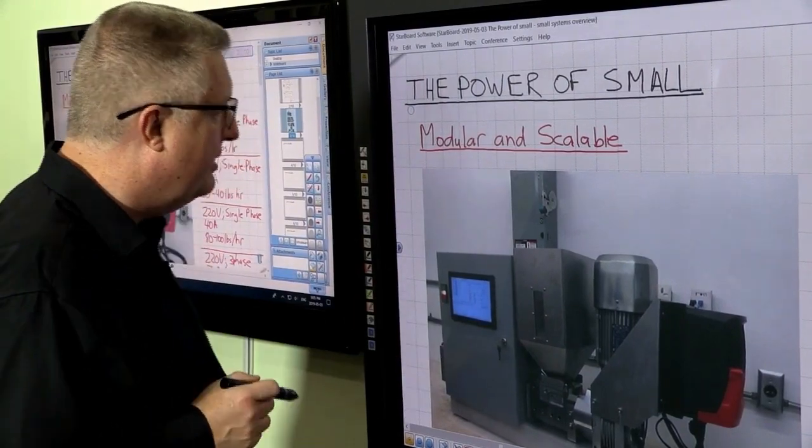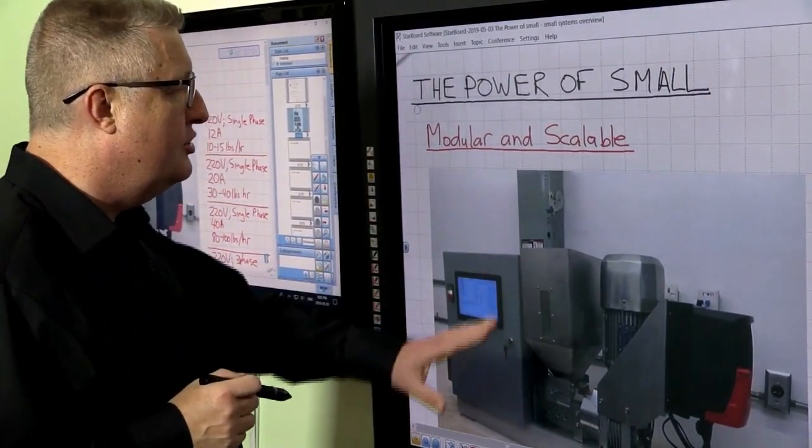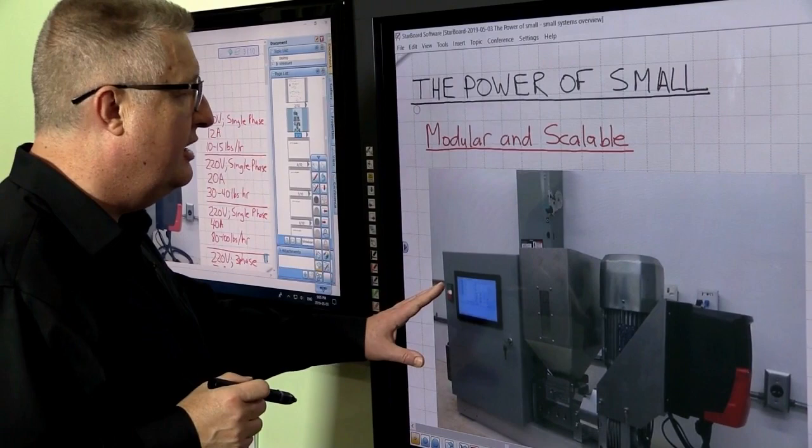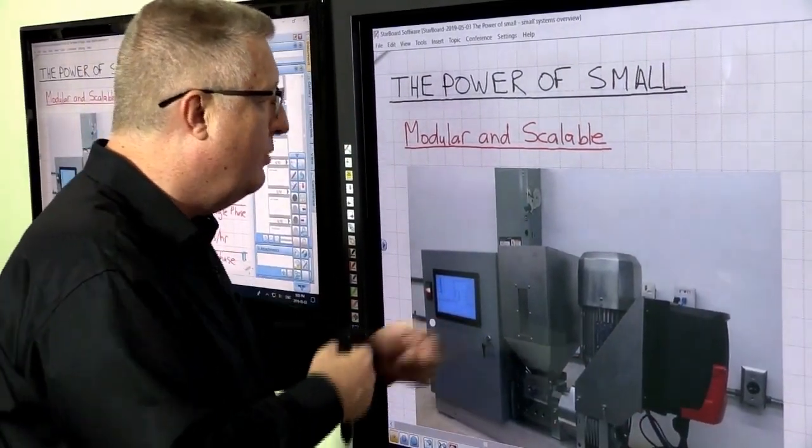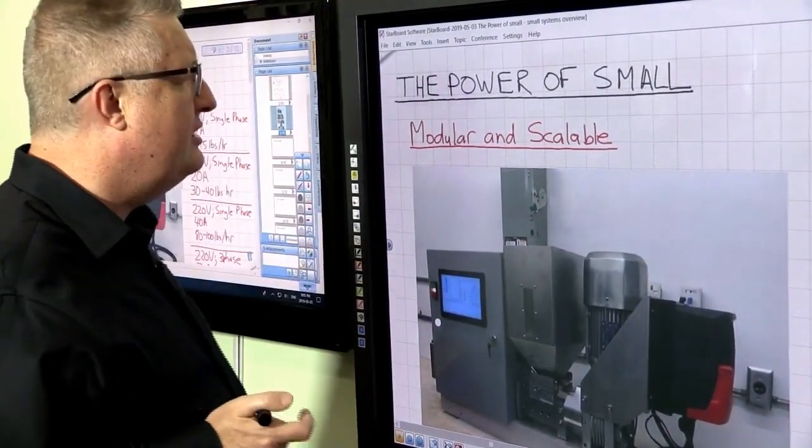Here's an example of a plastics extrusion machine. This machine here is about four feet long, about a foot wide, and about three feet tall.